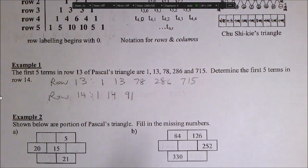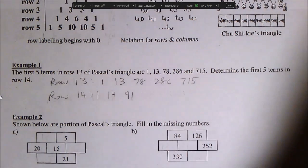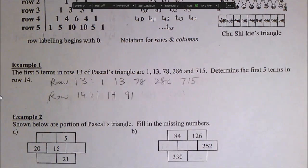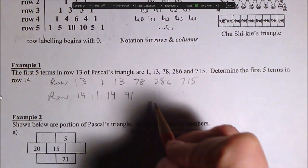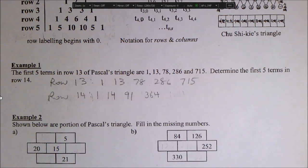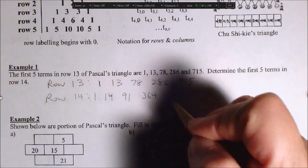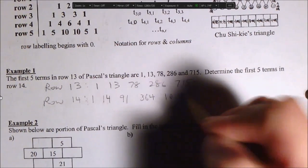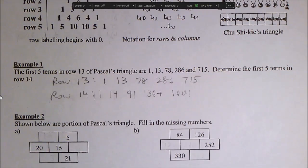And then we add these two. You get 91. And then you add these two. I'm going to use the calculator. You get 78 plus 286. You get 364. And then you add these two. So 286 plus 715, 1001. Those are the terms of row 14.